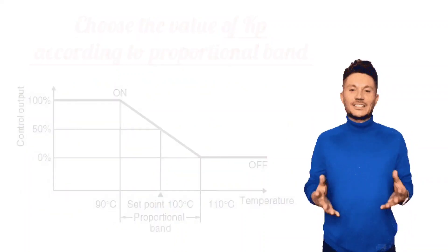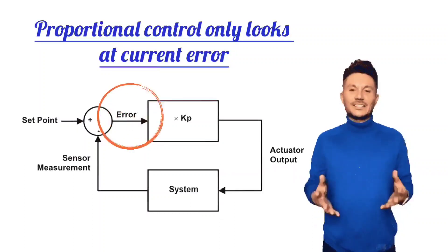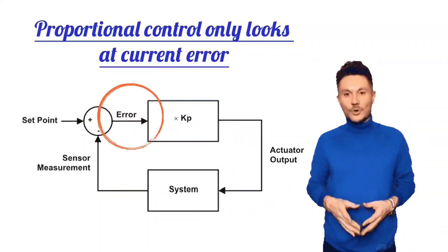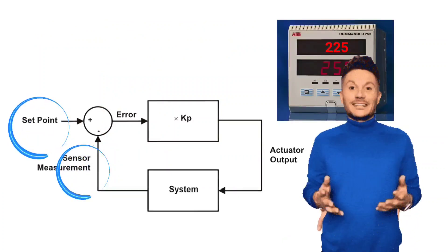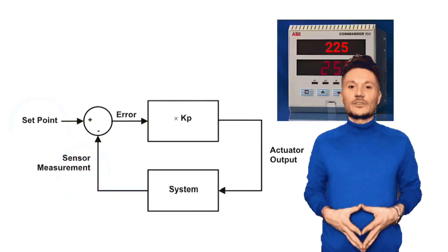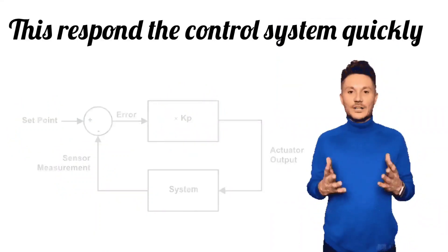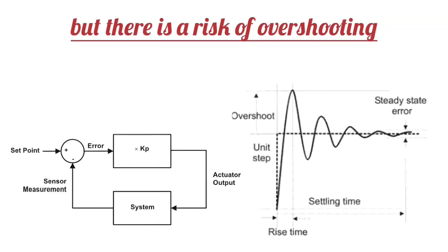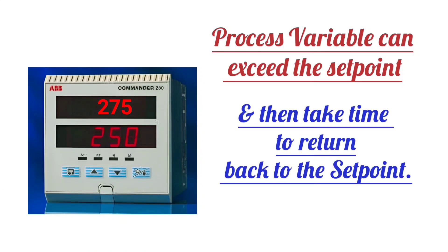Look friends, proportional control only looks at current error, meaning the current difference between the set point and the actual process variable. This responds the control system quickly. But there is a risk of overshooting. Means, the process variable can exceed the set point and then take time to return back to the set point.